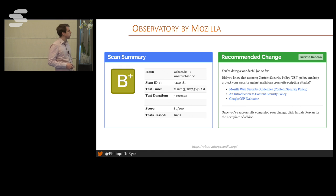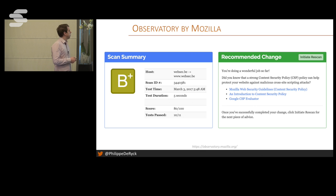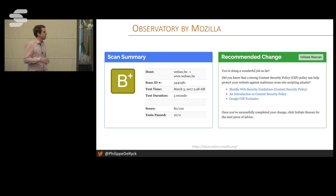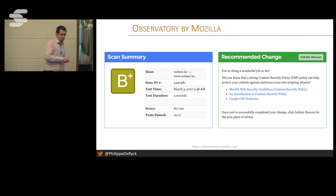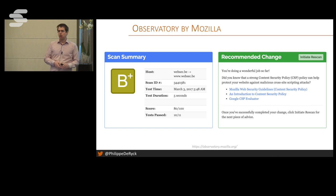Mozilla recently launched the Observatory, which does something very similar with a bit more tests, including third-party test software. When I scan my website, I get a B+ with 80 out of 100 — which doesn't seem very good, but it's actually quite okay. They give recommended changes: apparently my CSP policy is not great, so I should improve it. I'll go into that in a moment.